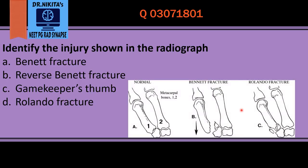Now coming to the first metacarpal base fractures: Bennett and Rolando are both intra-articular fractures. In Bennett's fracture there is a two-fragment fracture with a pull on the bone by abductor pollicis longus. Rolando is essentially a comminuted Bennett fracture, where there is a Y-shaped or T-shaped comminution of the fracture fragment.